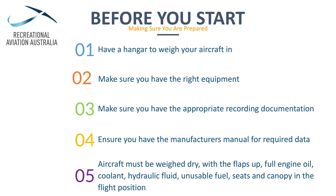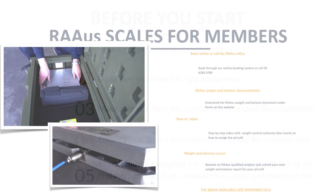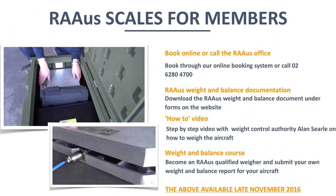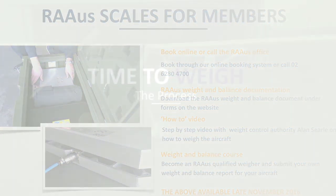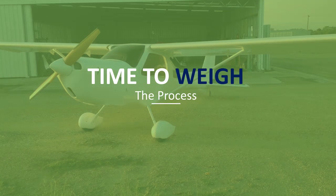Aircraft must be weighed dry, with the flaps up, full engine oil, coolant, hydraulic fluid, unusable fuel, seats and canopy in the flat position. REL's have purchased a set of calibrated scales for members' use free of charge — members will, however, need to cover the cost of transportation to and from Canberra. These scales are battery operated and therefore do not require any electrical power supply. With version 4 of the REL's technical manual, members can become weight and balance endorsees by completing the online weight and balance course. Weight and balance endorsees can weigh their own aircraft and supply REL's with the weight and balance report.